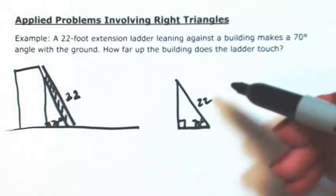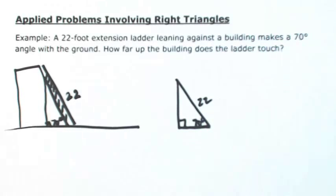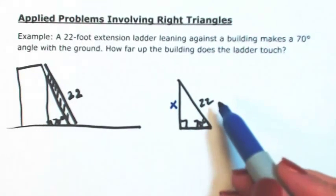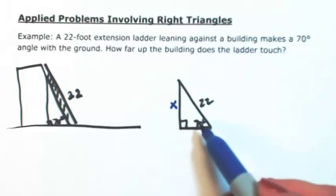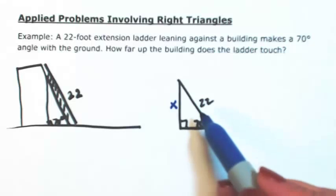We have an angle and a side. So if I want to find how far up the building is reaching, let me call that x. So involving this angle and the side, I need to know what the opposite is given the hypotenuse.